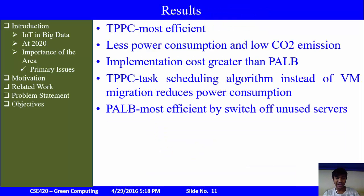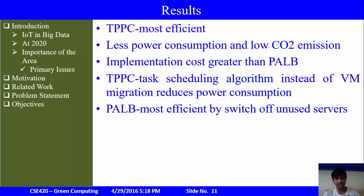In this research, three task scheduling algorithms — TPPC, RASA, and PALB — are analyzed using an IaaS simulation toolkit and compared on three parameters: power efficiency, cost effectiveness, and CO2 emission. Results show TPPC is the most efficient due to less power consumption and low CO2 emission, however its implementation cost is greater than PALB. Task scheduling algorithms can be deployed in TPPC instead of VM migration to reduce power consumption further. Power consumption and CO2 emission in PALB would be minimized by switching off unused servers, making PALB the most efficient algorithm fulfilling power efficiency, cost effectiveness, and environmental impact. A combination of these techniques across all three algorithms could yield a new algorithm satisfying all three criteria.